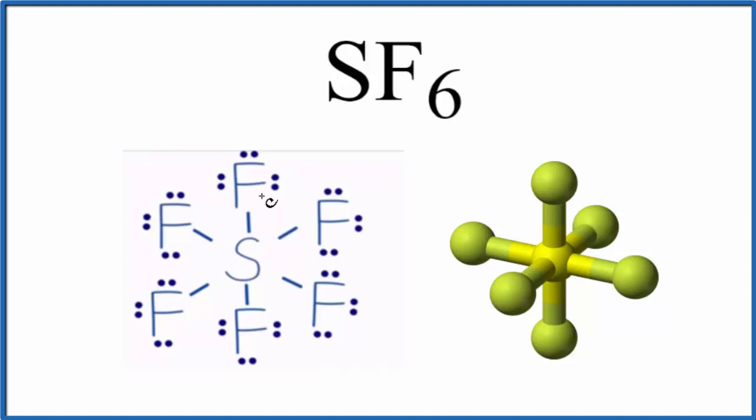Here they share. It's not an equal sharing, but the sulfur shares with the fluorine. This line represents a covalent bond where two electrons, a pair of valence electrons, are shared between the sulfur and the fluorine.